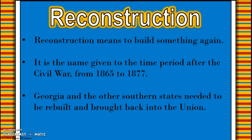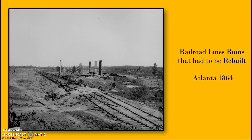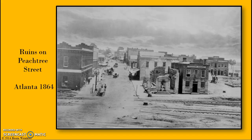Reconstruction by definition meant to build something again, and it was the name given to the time period after the Civil War. Georgia and all of the other southern states that seceded and fought in the Confederacy needed to be rebuilt and brought back into the Union. Here you can see the rail lines outside of Atlanta that were completely torn up by Sherman's March and the other destruction in Atlanta from when Sherman burnt the city.